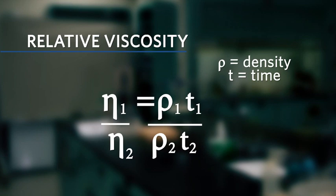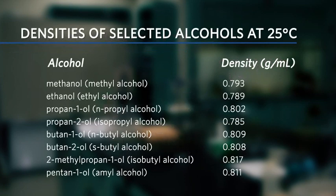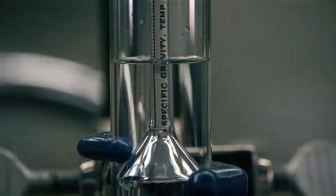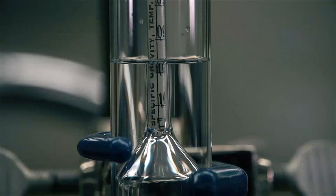As discussed in class, the relative viscosity is calculated using densities and flow times. Densities of pure substances are tabulated in reference tables. Densities of solutions have to be determined using the appropriate hydrometer.